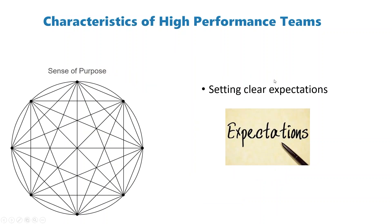Let's start looking at this wheel in more detail, starting at the top and working clockwise. The very first characteristic — and these aren't necessarily in any order of priority — is that high-performing teams have a sense of purpose. They're very clear about what they're there for and what they need to do. Today we're going to be talking about characteristics of high-performing teams and I'll give more detail shortly.